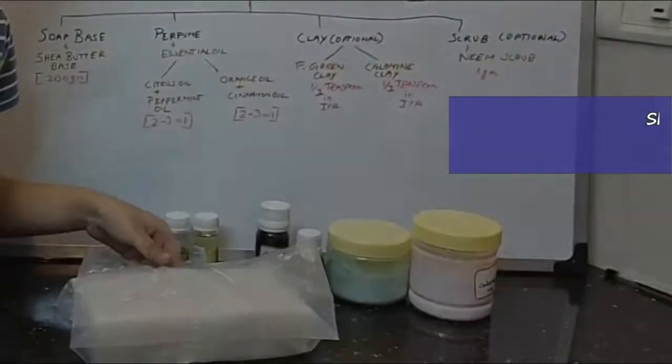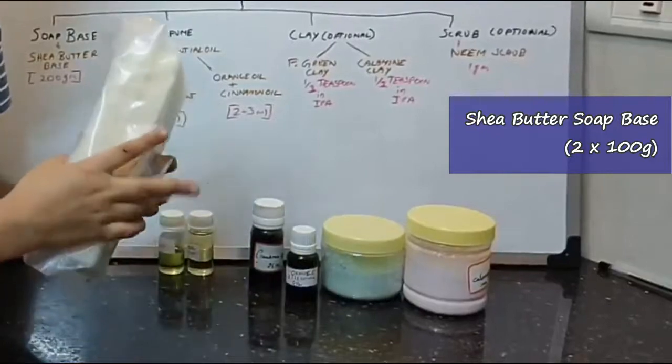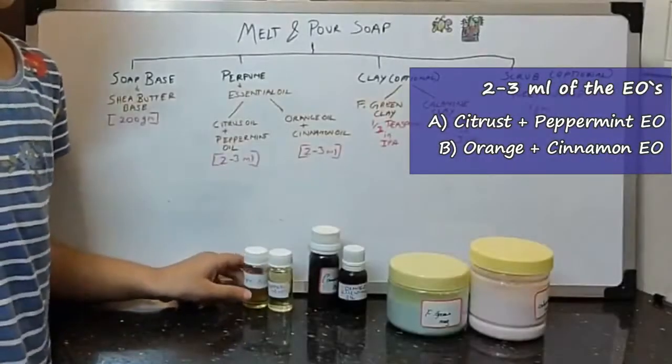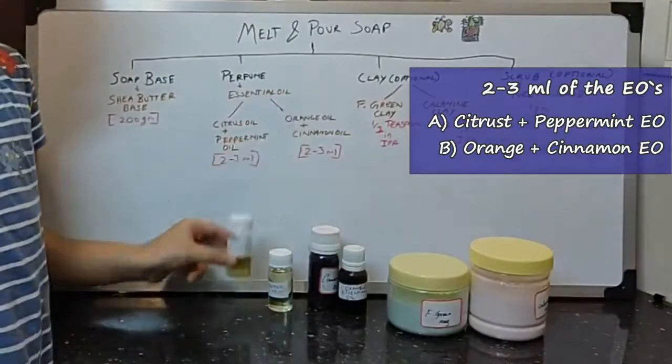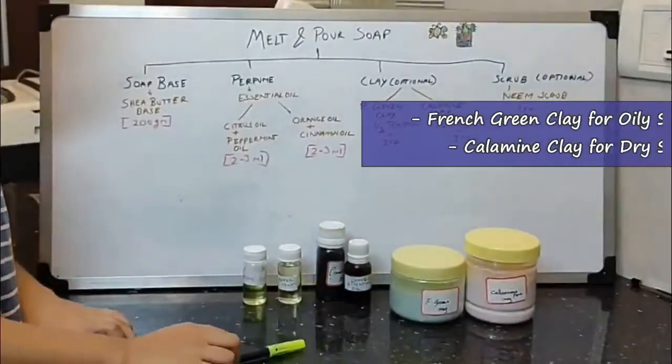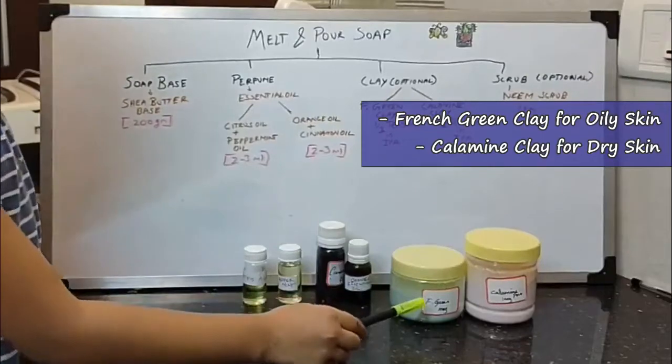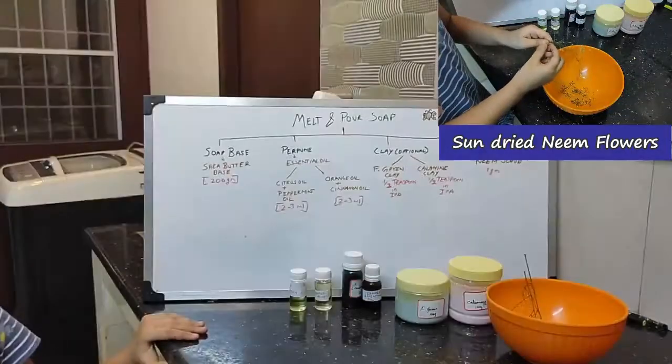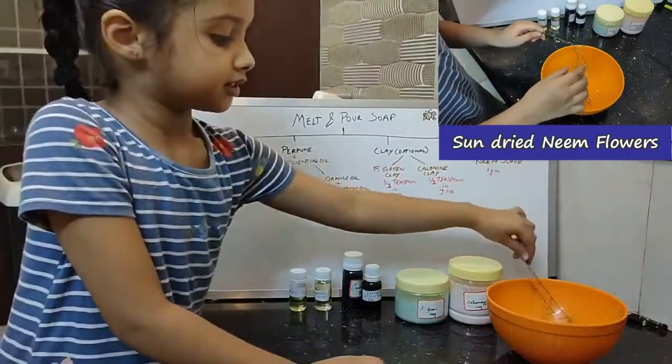Today, we want to use shea butter soap base. For perfume, we are using essential oils. For clay, we are using French green clay and calamine clay. And for scrub, we are using milk scrub.